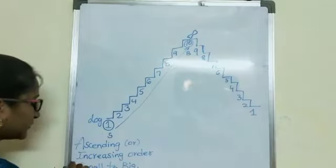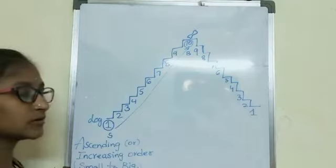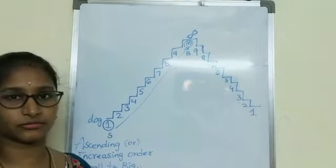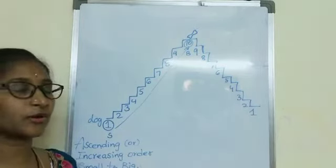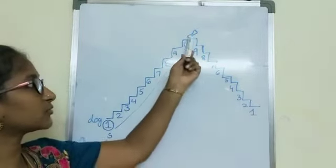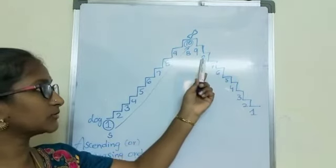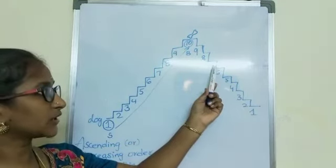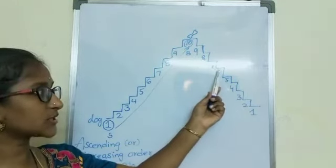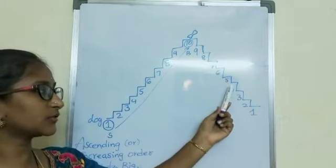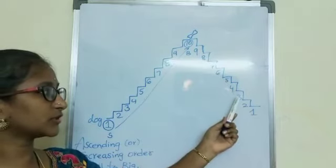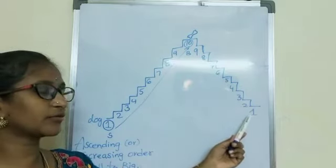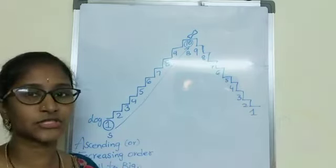That means arranging numbers from small to big. After it reached the 10th step, the dog wants to come down. So, from the 10th step it came to 9th step, it came to 8th step, it came to 7th, 6th, 5th, 4th, 3rd, 2nd, and finally it reached step 1.